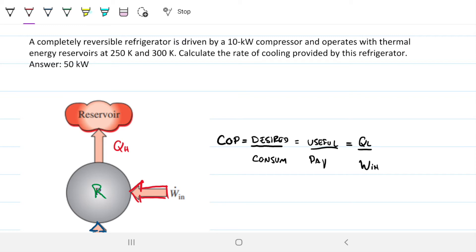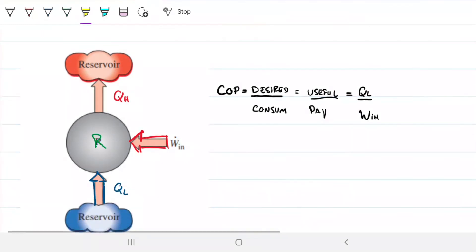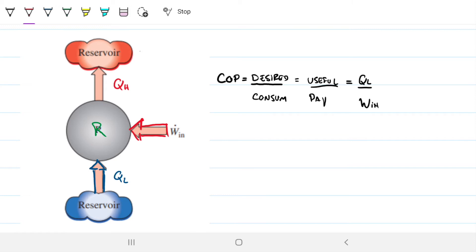Note that they don't give us which one is the high, which one is the low, because it's quite obvious, right? This one has to be the 300, and this one has to be the 250, or else we wouldn't need a refrigerator.